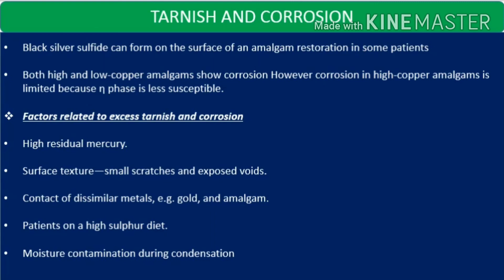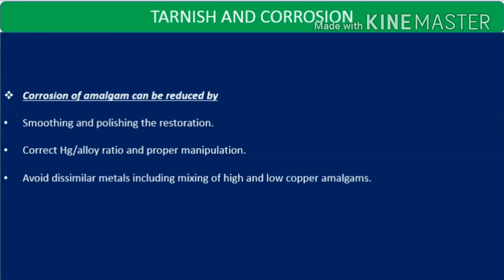Factors related to excess tarnish and corrosion include: higher mercury content; surface texture issues such as exposed voids and scratches; contact of dissimilar metals like gold and amalgam, which leads to galvanic shock and a galvanic current causing tarnish and corrosion; patients on a higher sulfur diet; and moisture contamination during condensation. Corrosion can be reduced by polishing and smoothing the restoration, using the correct mercury to alloy ratio following the AIMS technique, proper manipulation, and avoiding dissimilar metals — including mixing of high and low copper amalgams.